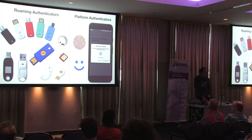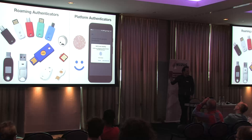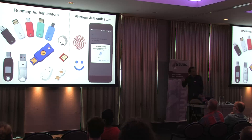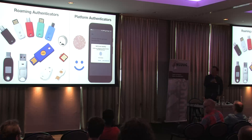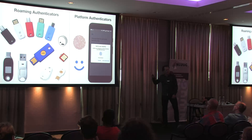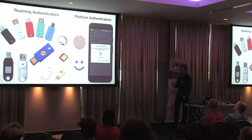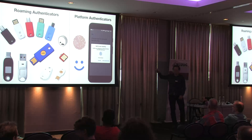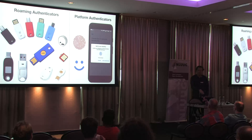There are also platform authenticators — authenticators built into a platform. For example, Android: your Android phone is basically a FIDO token, and it can use your fingerprint scanner for biometric authentication. There's also Windows Hello. Microsoft Windows actually has the best implementation of FIDO2 at the moment — every security feature you would want is implemented in Microsoft Edge. There's also Touch ID; my Mac has a touch bar, so I can use my fingerprint on my Mac as an authentication token.